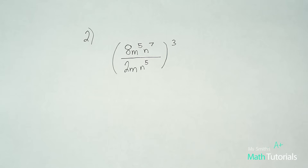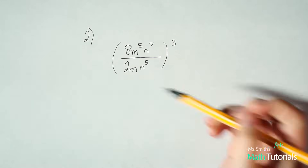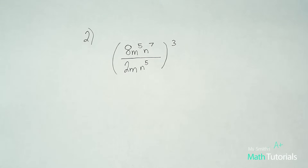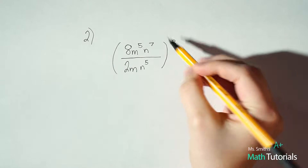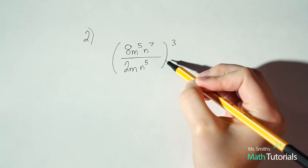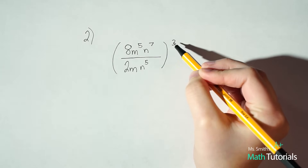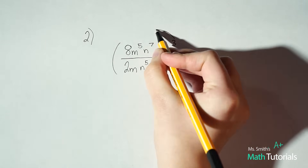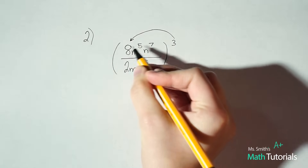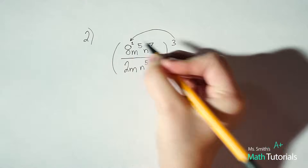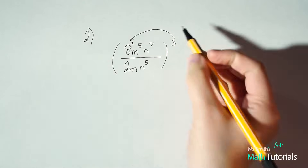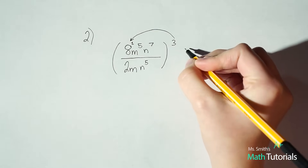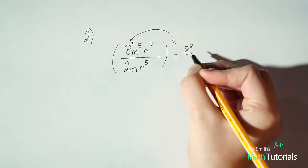Now we've got a problem that looks pretty similar to the last one, although this time we've got whole numbers in there. There's more than one right way to solve this problem, but I'm going to show you a very consistent way throughout this whole process. We've got a fraction with parentheses around it, and we've got a power of 3 on the outside, which means everything within is being brought to the power of 3. Remembering rule number 4, the power to power rule, we want to distribute the 3 to every single part of this problem, including the whole number. Remember that 8 has an understood exponent of 1, so 3 times 1 gives us 8 to the 3rd power. We'll worry about simplifying that in a minute.